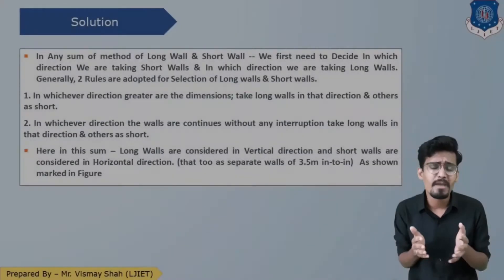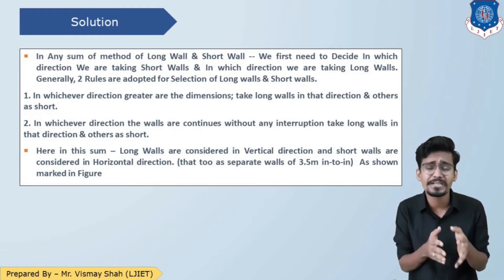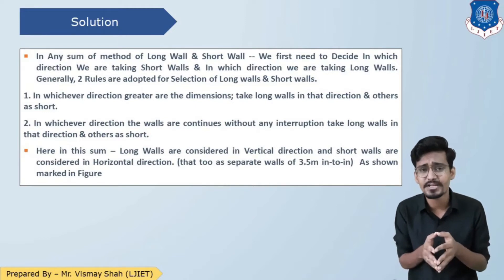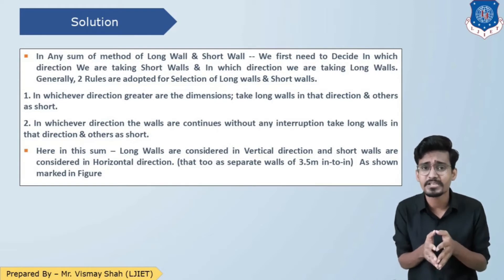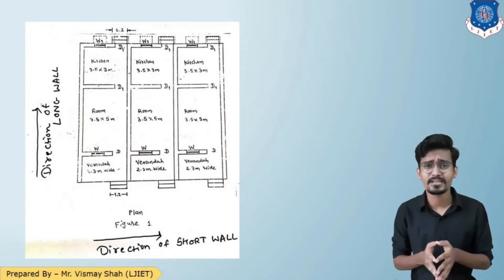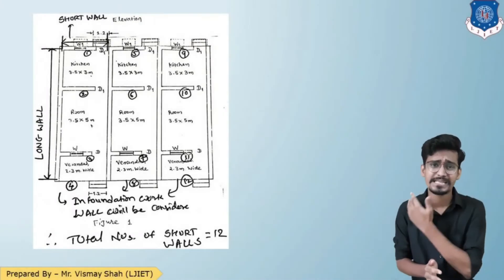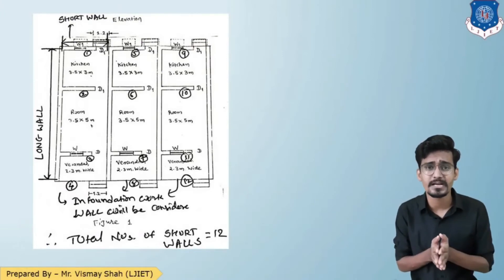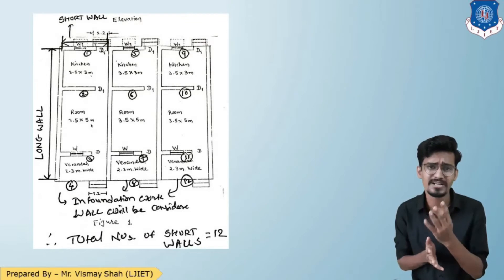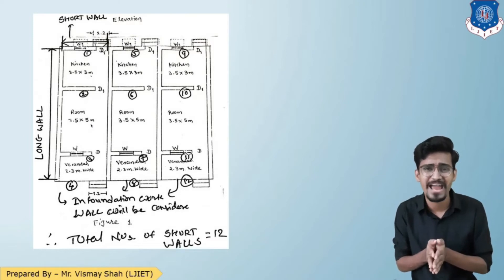We are doing this sum by the long wall and short wall method. The first step is to decide which direction we take long walls and which direction we take short walls. In the vertical direction we are taking long walls, and in the horizontal direction we are taking short walls. There will be four long walls and 12 short walls in smaller parts of 3.5 meter.